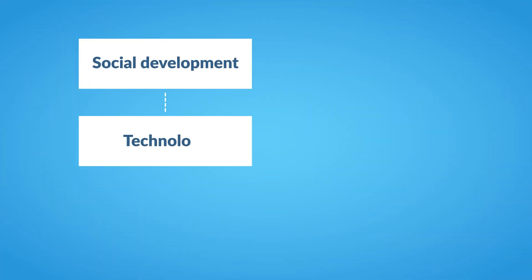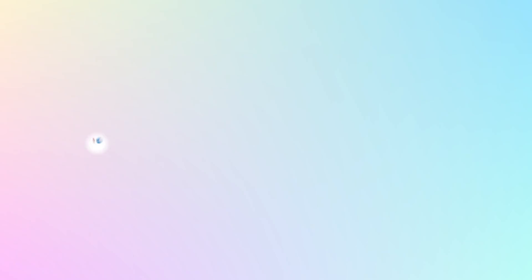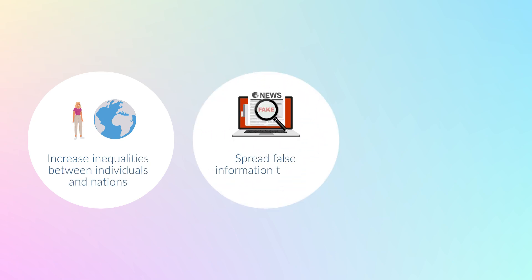When it comes to social development, technology can help to reduce poverty and provide new education opportunities. On the other hand, it can also increase inequalities between individuals and nations, spread false information through digital platforms and provide ways to control people's behavior.